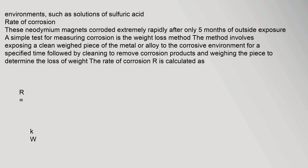Rate of corrosion. These neodymium magnets corroded extremely rapidly after only five months of outside exposure. A simple test for measuring corrosion is the weight loss method. The method involves exposing a clean, weighed piece of metal or alloy to the corrosive environment for a specified time, followed by cleaning to remove corrosion products and weighing the piece to determine the loss of weight. The rate of corrosion R is calculated accordingly.